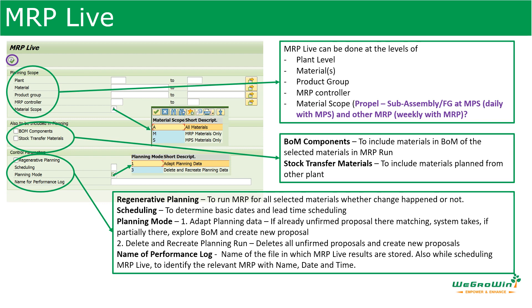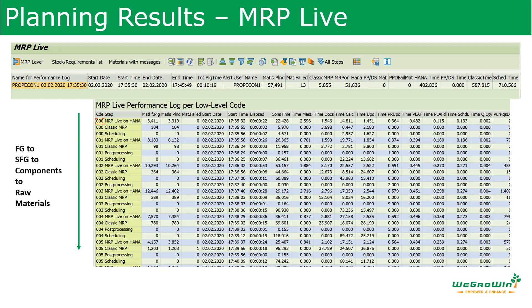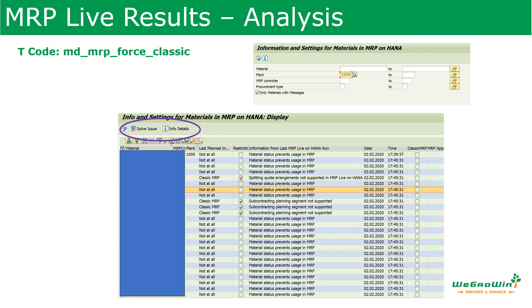After entering all these details, execute the transaction to run MRP. The system will run MRP and show the result — a list of materials starting from finished goods through semi-finished goods, then components, then raw materials, in sequence. You can see many columns: the time taken, the materials, whether it ran with classic MRP or MRP live. MRP live results can also be analyzed using the transaction MD_MRP_FORCE_CLASSIC, where you can enter the material and plant to see the MRP status and whether there are any issues.